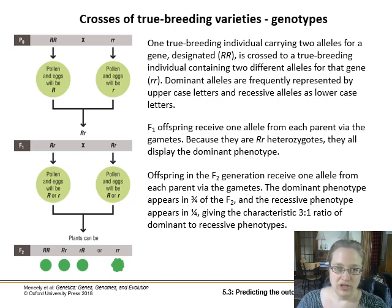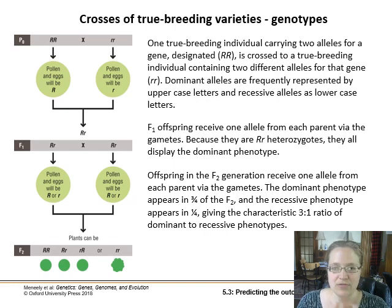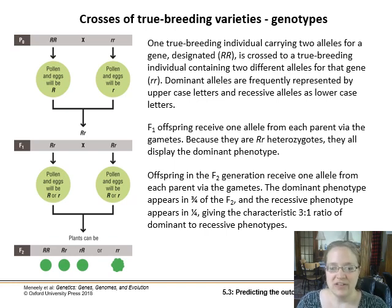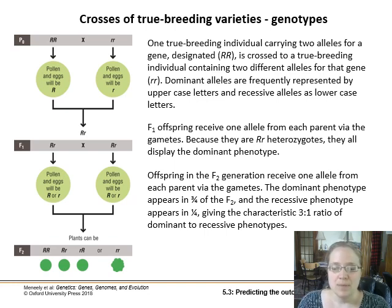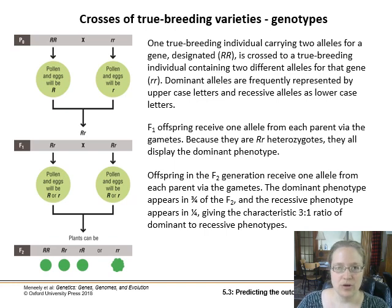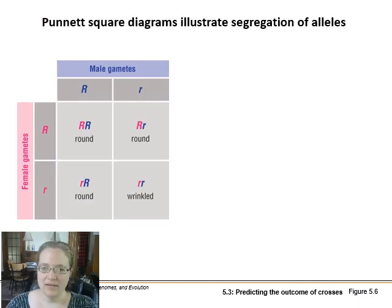There's a chance for every offspring, but if we get enough offspring — say around 100 — then we should see around 75 percent, or three quarters, having the dominant trait and around 25 percent, or a quarter, having the recessive phenotype. So we'll see that three-to-one ratio.